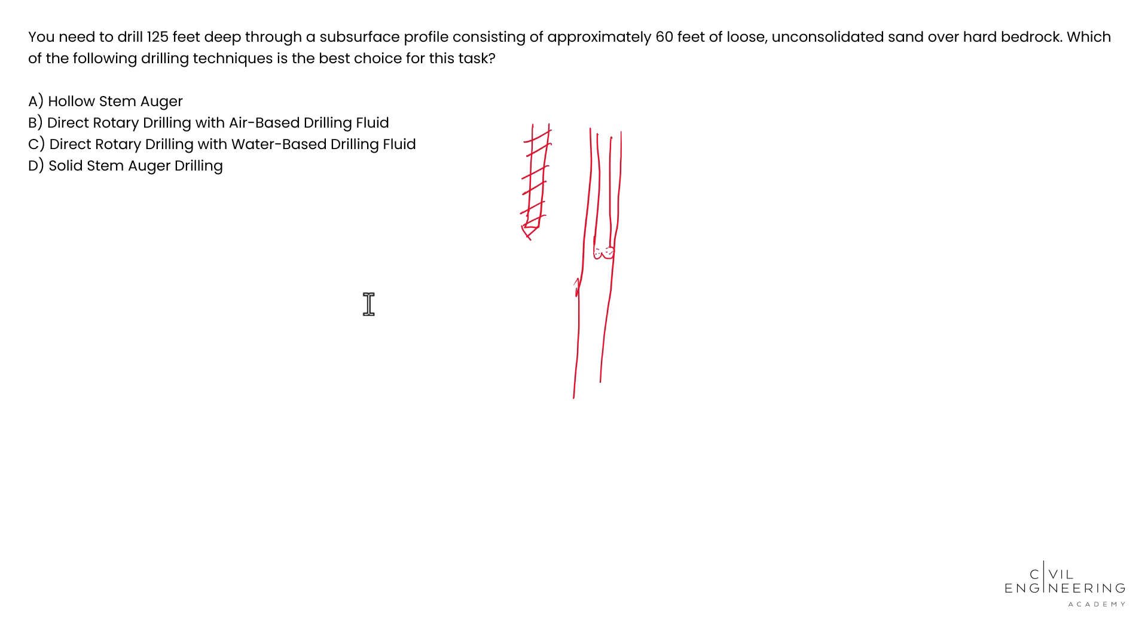And so with this, let's go through each one of these. So hollow stem auger, this is really more suitable for shallow drilling and sampling. So it's really not great for depths over a hundred and we're going 125 feet deep. So if we're thinking about what they gave us here, they told us that we have approximately, let's say 60 feet here of sand